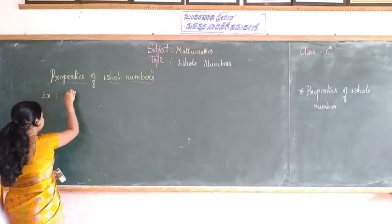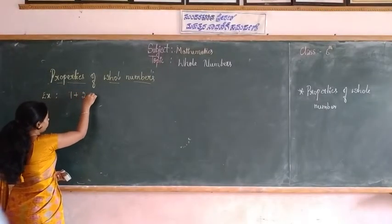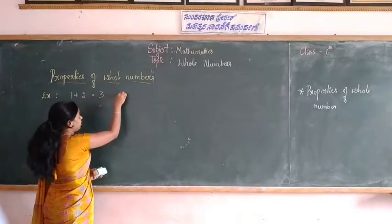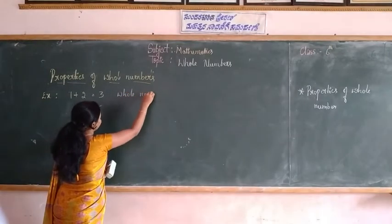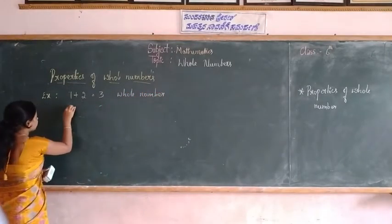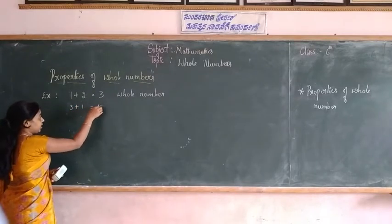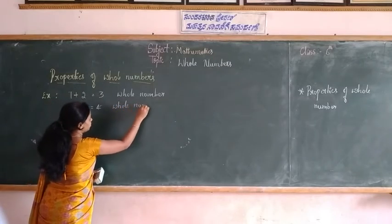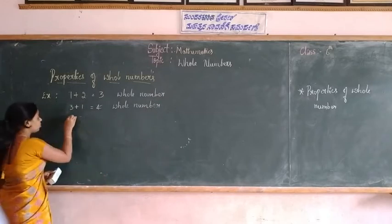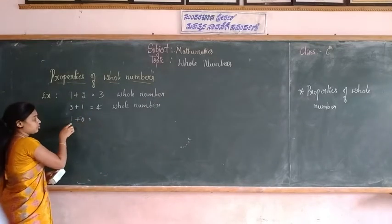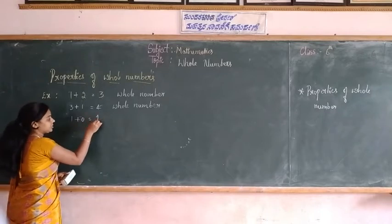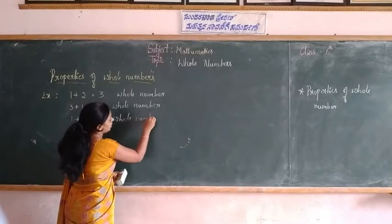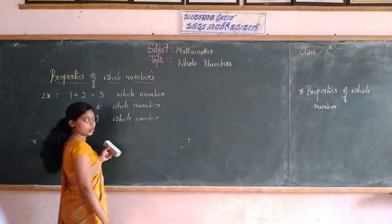Consider one example. 1 plus 2 which is equal to 3 — we get a whole number. 3 plus 1, we get 4 — again we get a whole number. 1 plus 0, which is added to 0, again we get the same number, which is a whole number. We know that whole numbers are the collection of natural numbers together with 0, and they start from 0 to infinity.